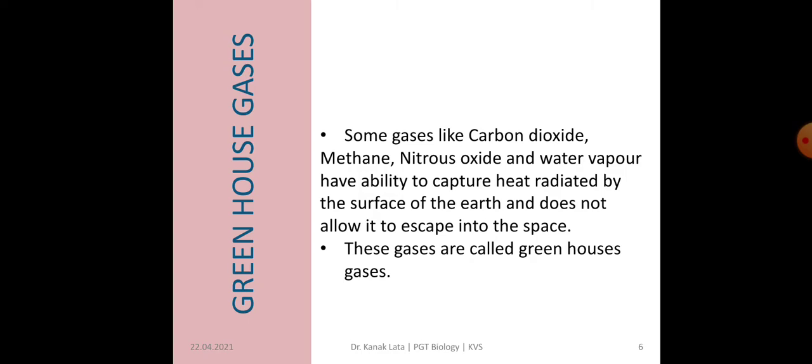The next topic is greenhouse gases. We know that sun heat radiations fall on the earth's surface. Whatever heat radiations fall on the earth are not fully absorbed by the surface of earth, but also get reflected back into the atmosphere and allow it to escape into the space. But some gases like carbon dioxide, methane, nitrous oxide and water vapor have the ability to capture the heat radiated by the surface of the earth, and hence do not allow it to escape into the space.